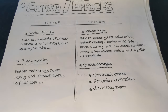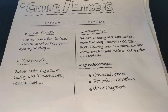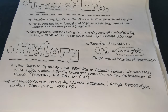For the causes I mentioned social factors such as better quality of living, education facilities, modernization, and better technology. For the advantages of urbanization I said better economy and education, better social life, and better housing. For disadvantages I said crowded places, unemployment, and pollution such as air and noise pollution. Then I talked about the different types of urbanization such as physical, social, demographic, and functional urbanization.